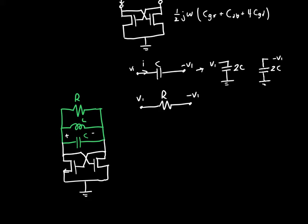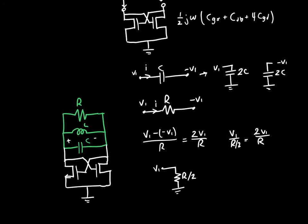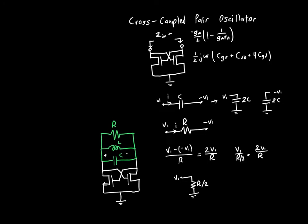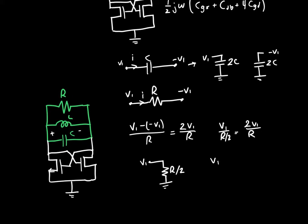If we don't want the current to change, we want V1 minus negative V1 over R, that's the current, is 2V1 over R. Well, if we were to connect a resistor between this node and ground, it would need to have value R over 2, because V1 divided by R over 2 is just 2V1 over R, which is the same current that we had initially. So the current is undisturbed. Similarly, we can connect another resistor to node minus V1, also with value R over 2.